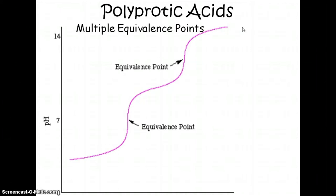So basically you have two of everything. You have two equivalence points, two half equivalence points, because you have two Ka's, which means you also have two pKa's.